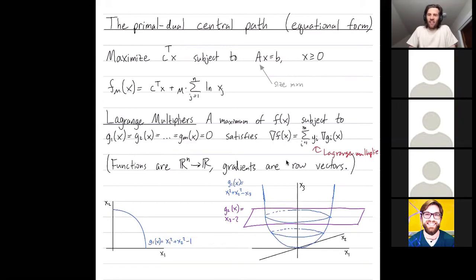Usually they're called lambda i's, but we're calling them yi's here because they're going to be analogous with the yi's that get introduced in duality for linear programming. Some technical comments are functions like f and the gis go from n-dimensional space to the reals, and we're going to consider all of our gradient vectors to be row vectors.